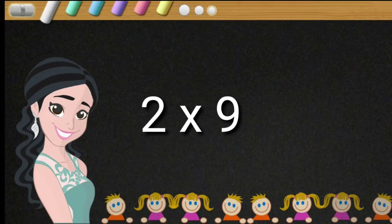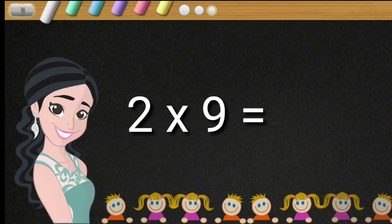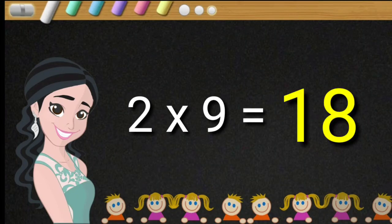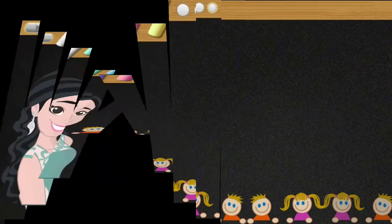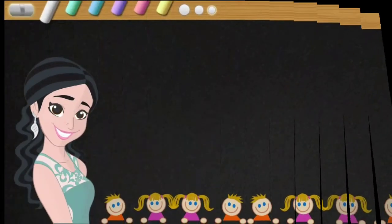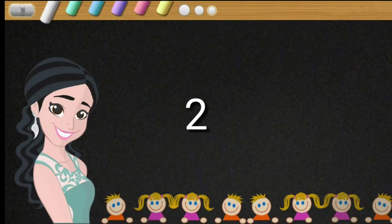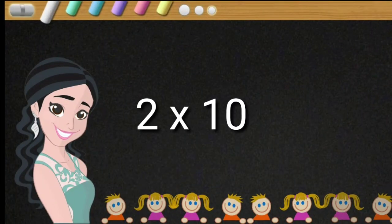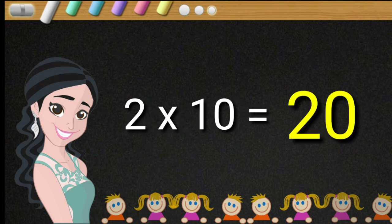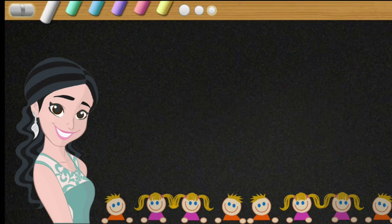Two nines are eighteen. Two nines are eighteen. Two tens are twenty. Two tens are twenty.